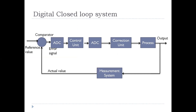There is also a digital closed loop system. Its block diagram is almost the same as the analog closed loop, with two additional blocks: an ADC (analog to digital converter) and a DAC (digital to analog converter). These are needed because the control unit is digital while the correction unit (actuator) is analog. A DAC is inserted between the control unit and correction unit, and an ADC is inserted between the comparator and control unit. This is the only difference between an analog closed loop system and a digital closed loop system.